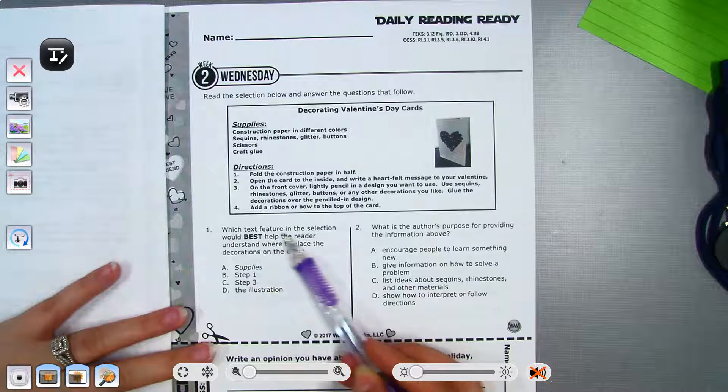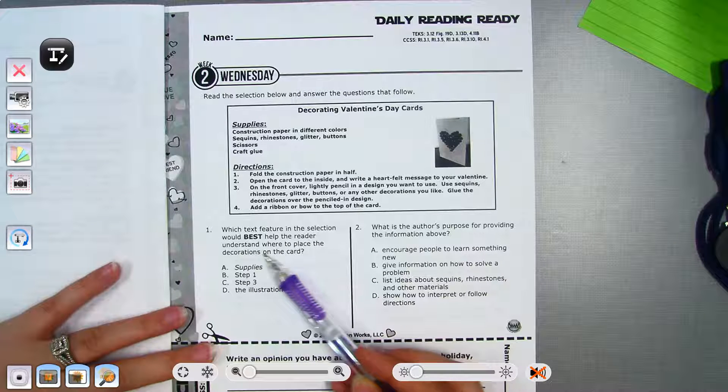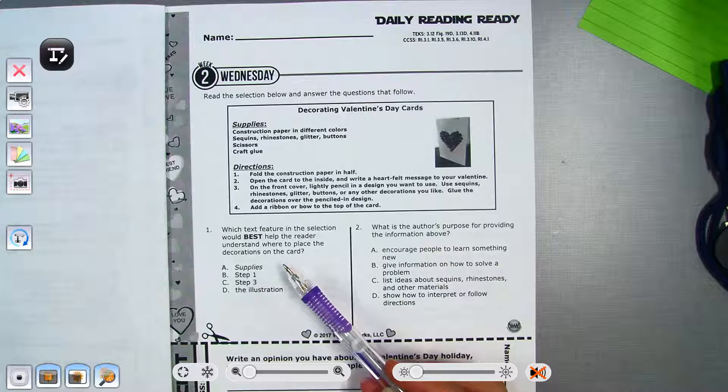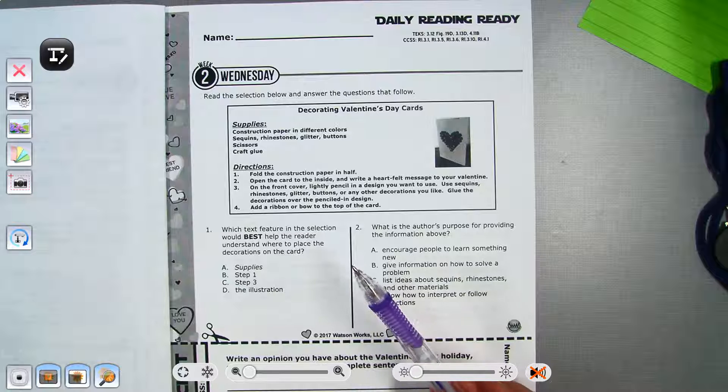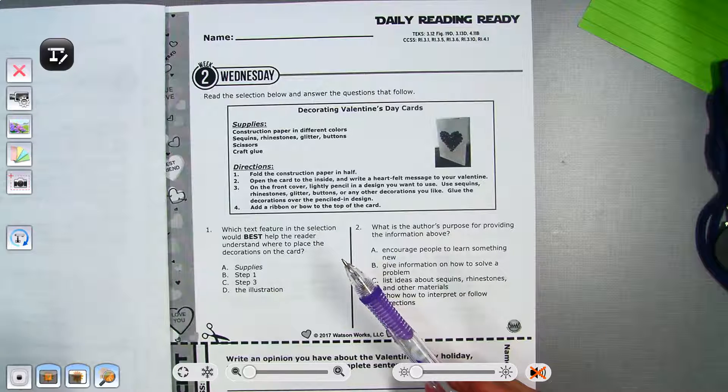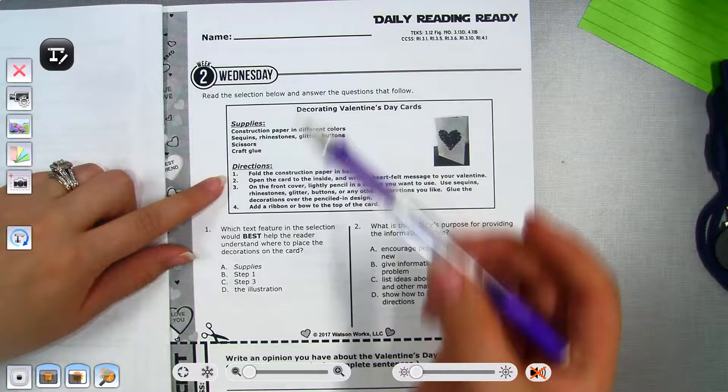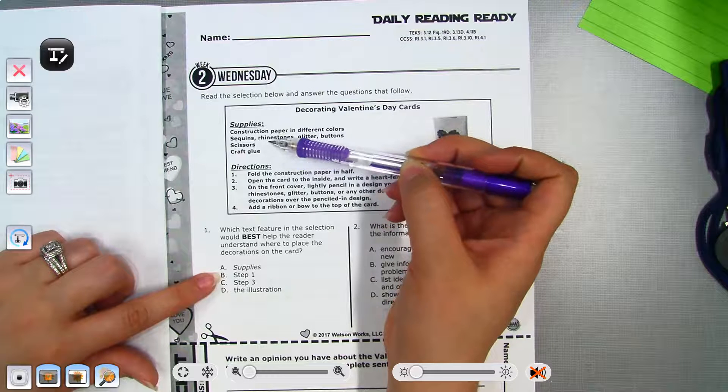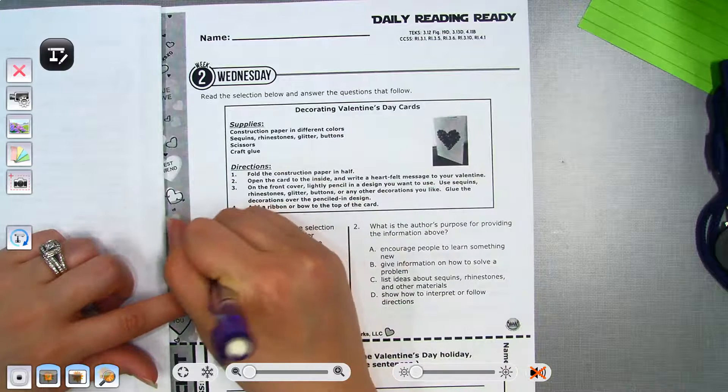Which text feature in the selection would best help the reader understand where to place the decorations on the card? So remember guys, text features are features that the author puts into his writing to help the reader better understand information, to find information easier. So it's wanting to know where we could find where to place the decorations. So I'm going to find that in my supplies. Am I going to find that up here in the supplies? No, it tells me what kind of decorations I can use, but it doesn't tell me where I would put my decorations. So A cannot be my answer.